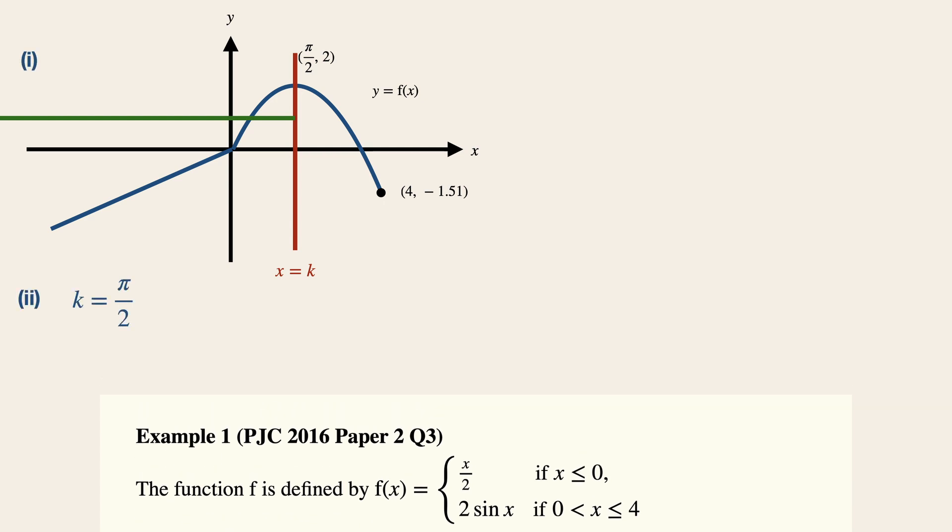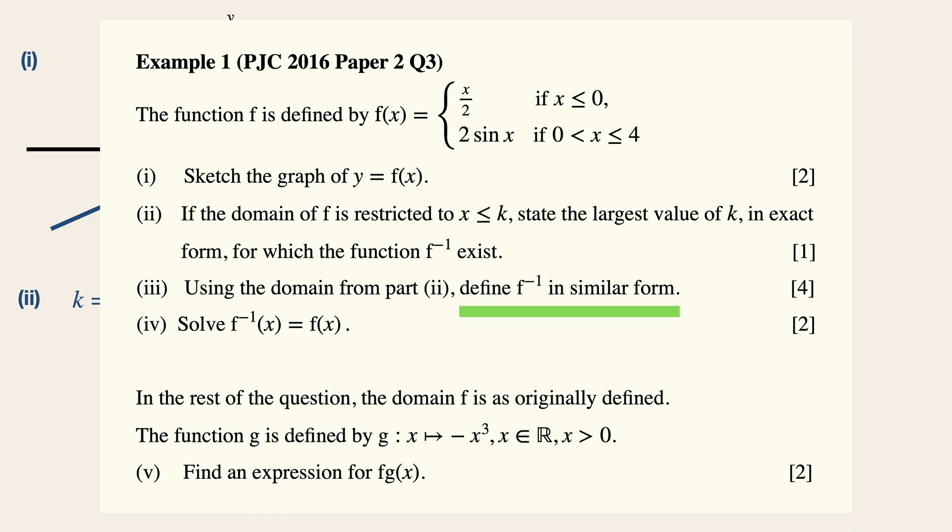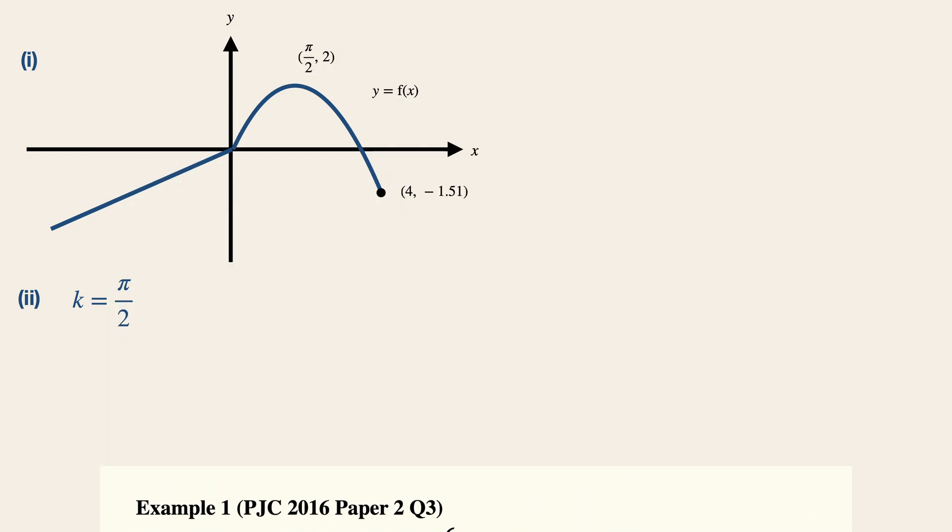Now for part 3, some students may not be clear of how to find an inverse of a piecewise function. Now not to worry, the very first thing we need to do is to define the new domain. So this is a big hint given in the question. So fx is now equals to x over 2, for x is less than equals to 0, and 2 sin x, if 0 is less than x is less than equals to pi over 2.